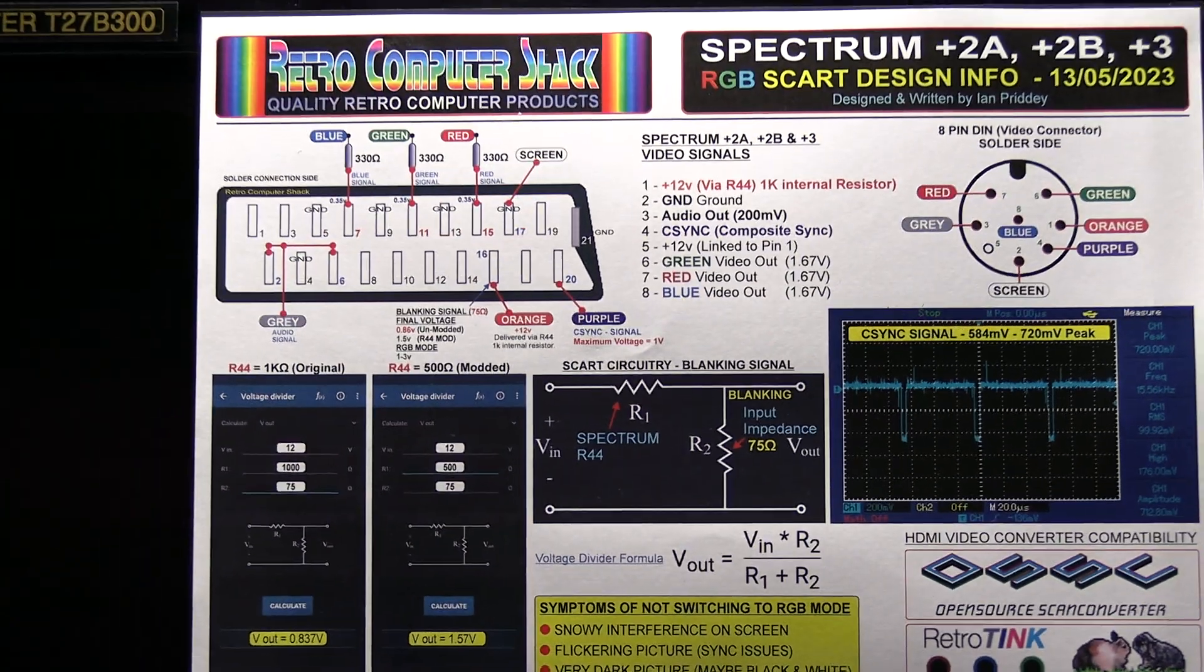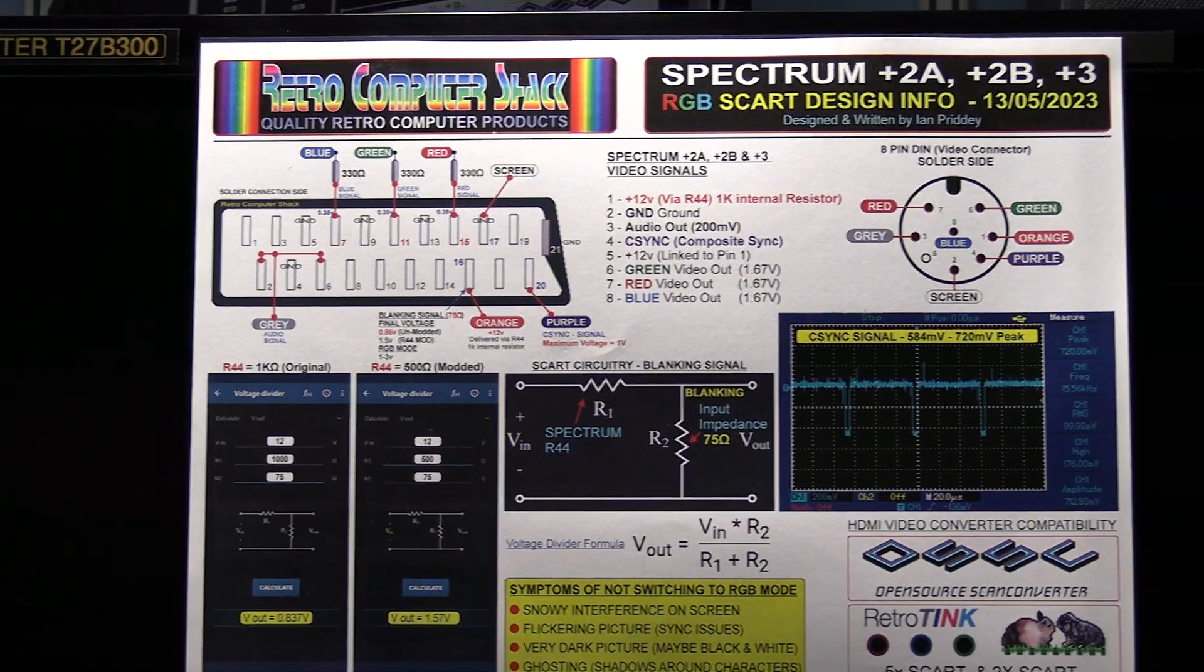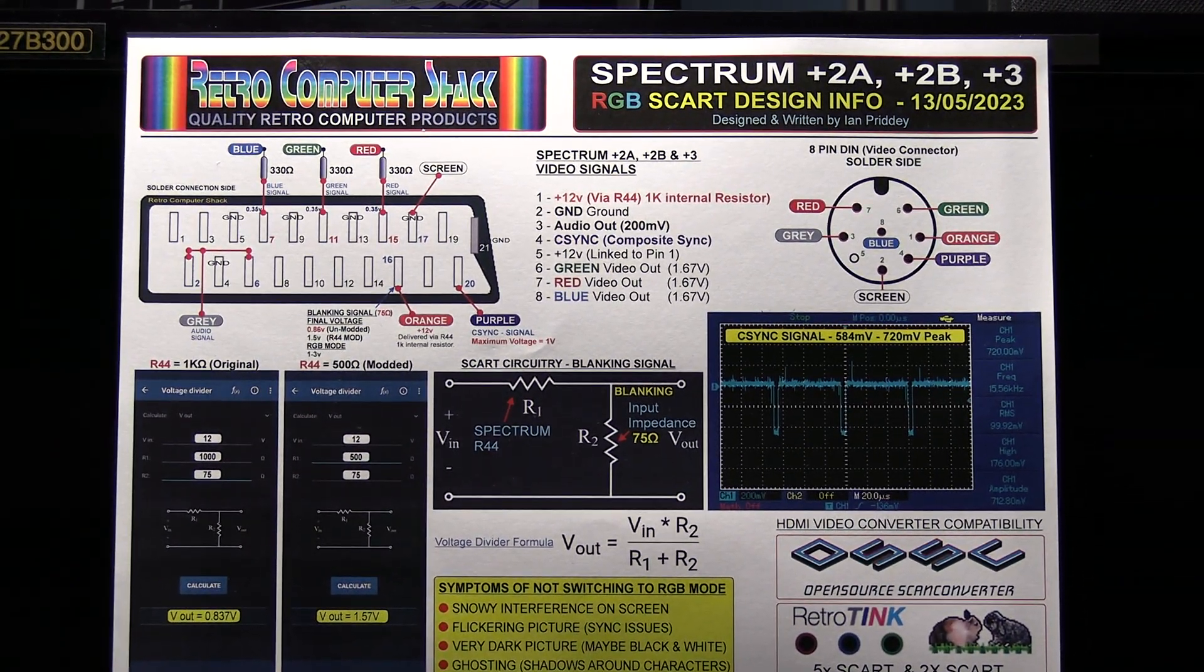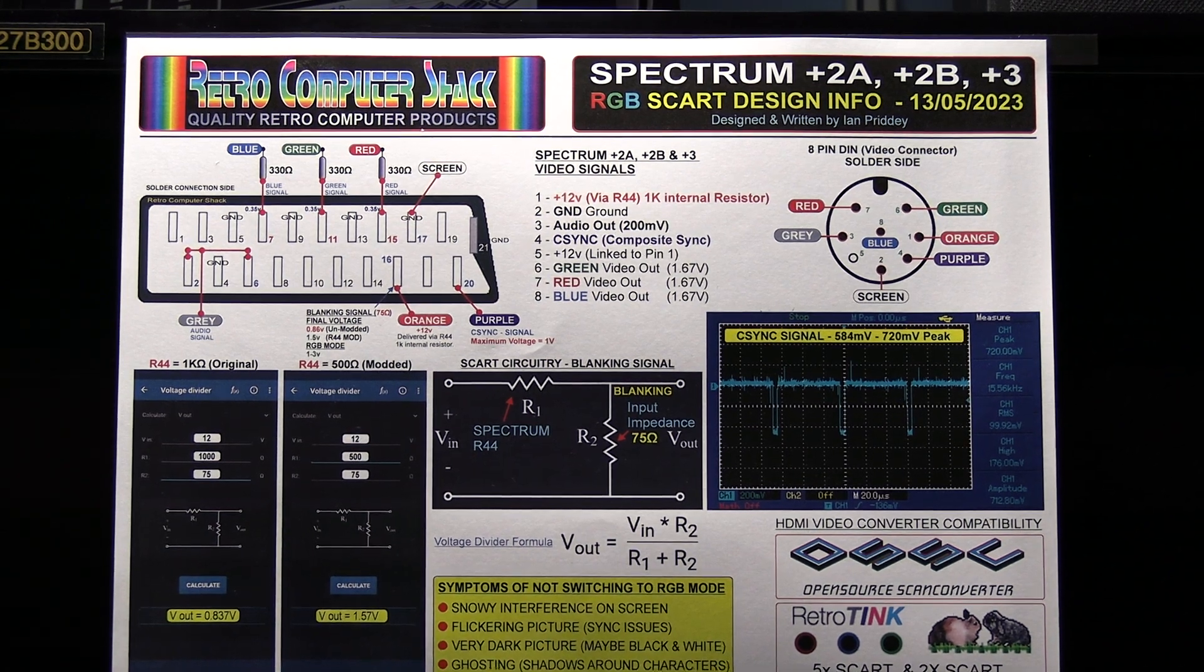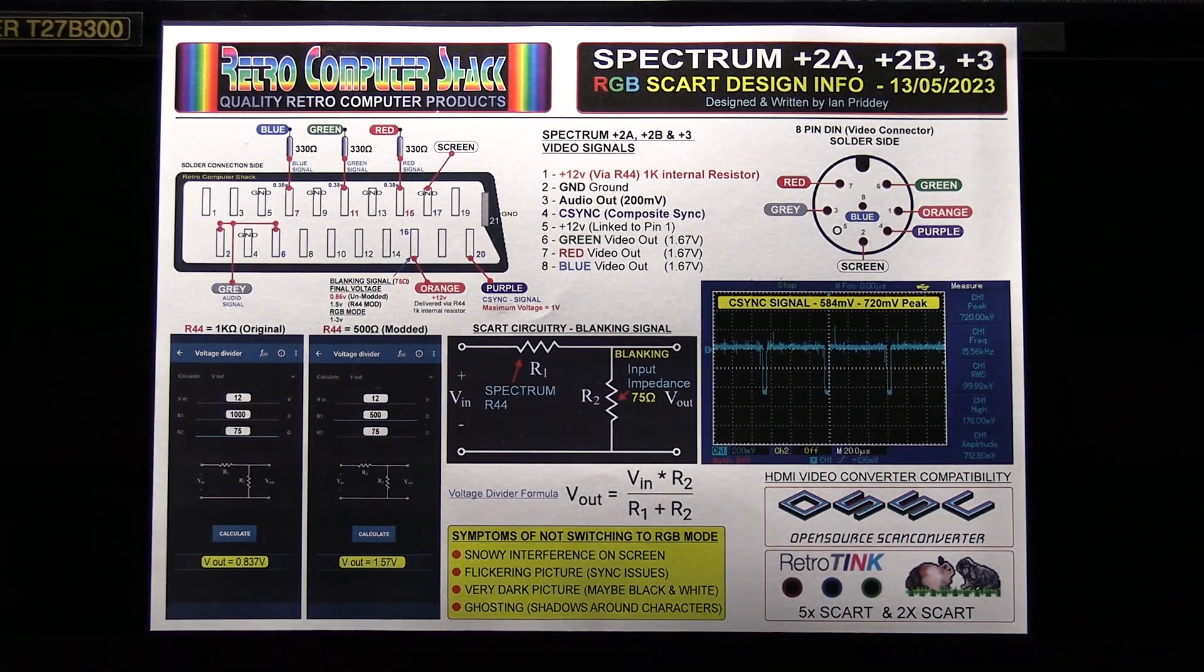So what we need to do is basically reduce the resistor value of R44 from 1k to about 500 ohms. So I shall show you how to do that.